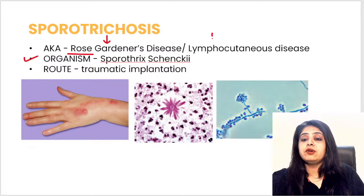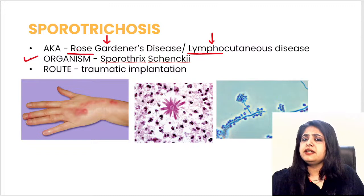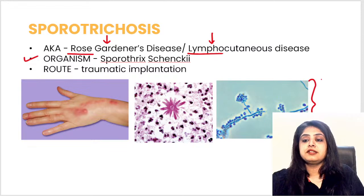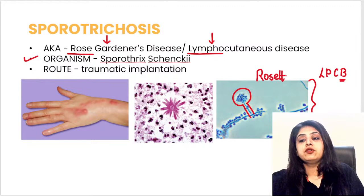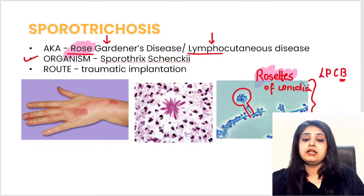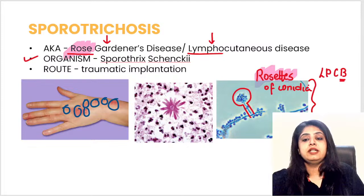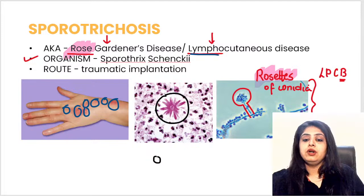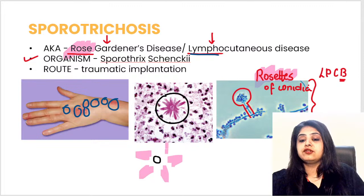Looking at this stain — the blue color tells us it is Lactophenol Cotton Blue. Notice the flowery arrangement showing rosettes of conidia, so everything is related to roses here. Always remember: rose gardener's disease shows rosettes of conidia with lymphocutaneous spread. You can see lesion one, two, three spreading gradually — it is a lymphocutaneous disorder.